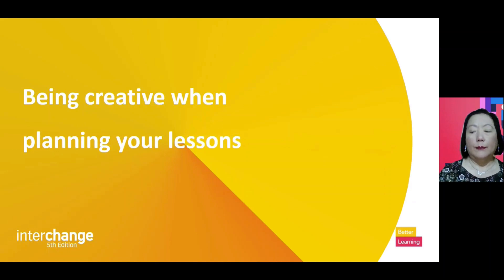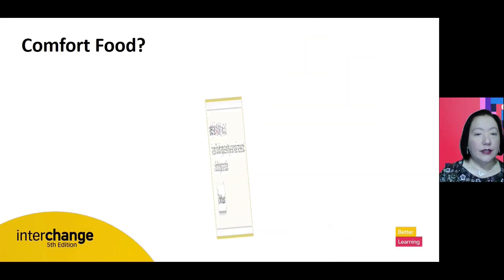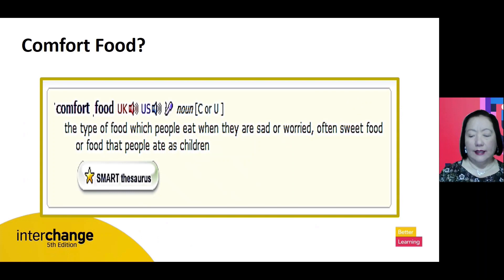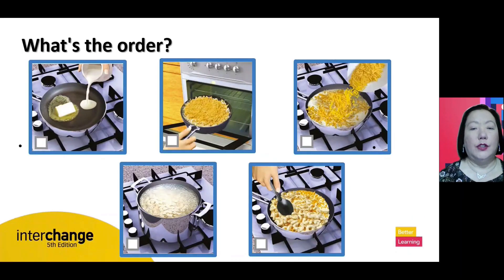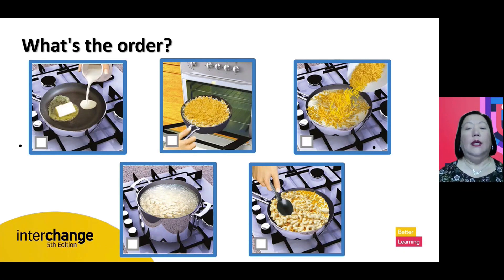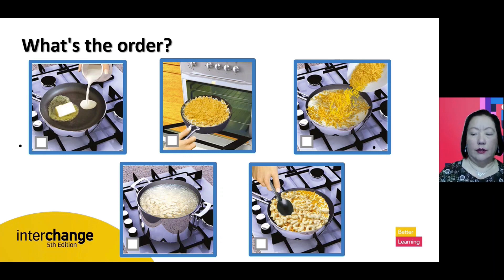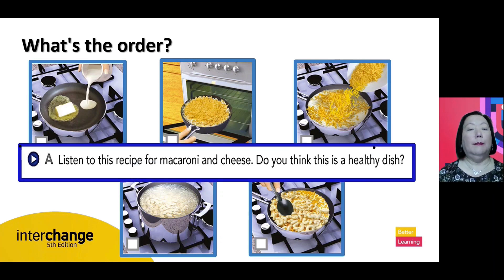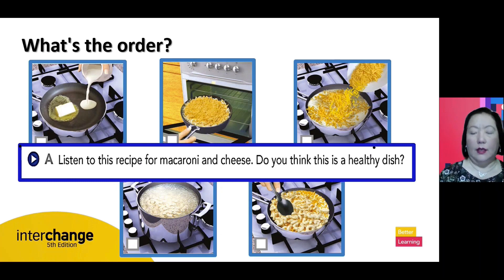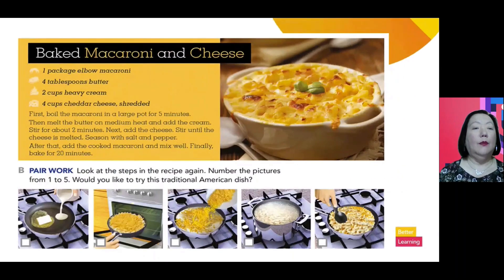What about being creative when planning your lessons? For a food topic, I define key vocabulary — boil, mix, melt, bake — and show pictures. Then I ask students to place the pictures in order. Once they finish, I play the listening exercise and they check if the order they chose was correct. Then I work on the reading passage and they see the same recipe again. I call one student at a time to read a sentence, like 'first, boil the macaroni in a large pot for five minutes,' and they say which picture number it refers to.